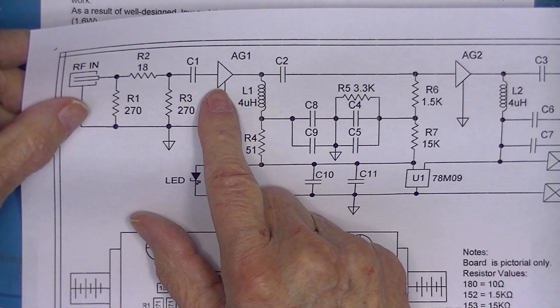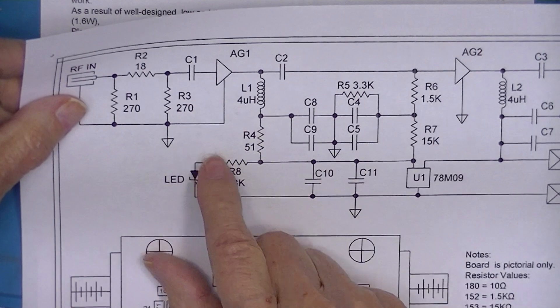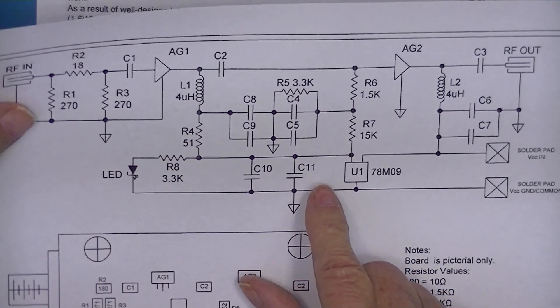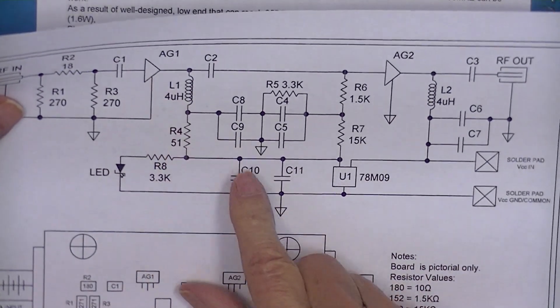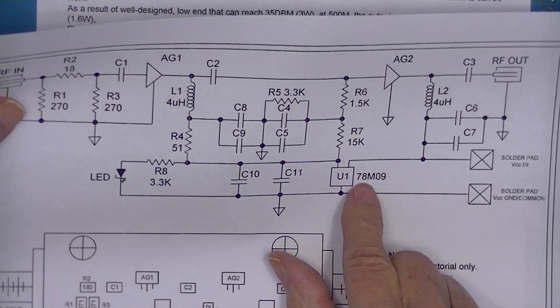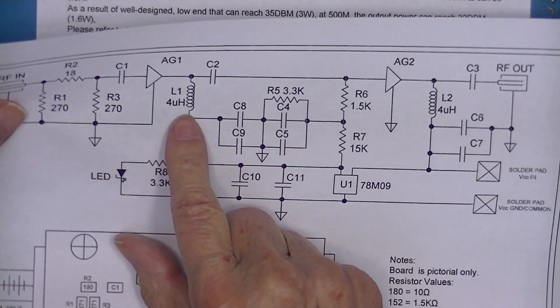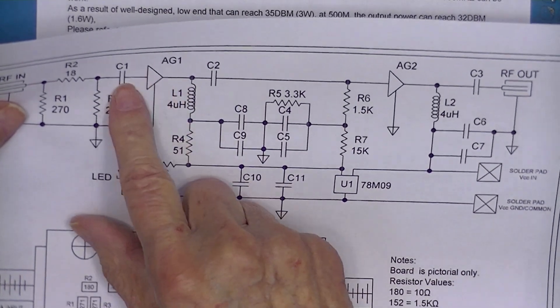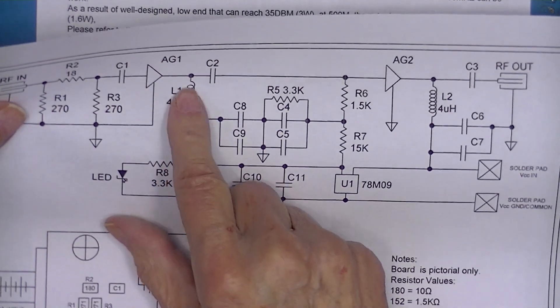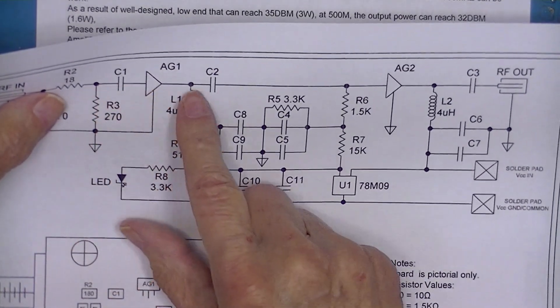This is an MMIC device. Power comes from, for the first stage, comes through a 9 volt regulator, a 51 ohm dropping resistor, a choke, and power is applied to the output of the gain stage. Blocking capacitors.